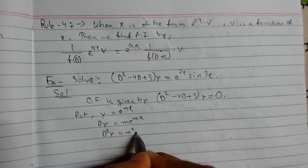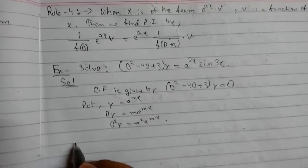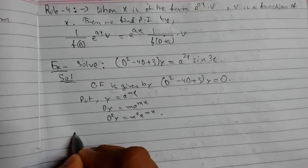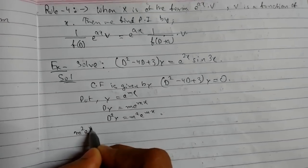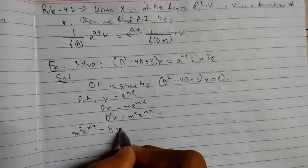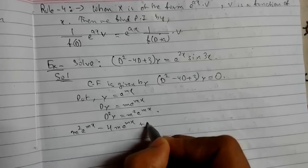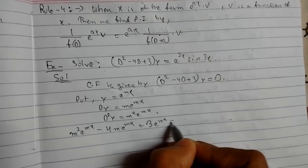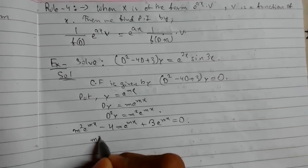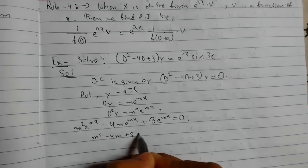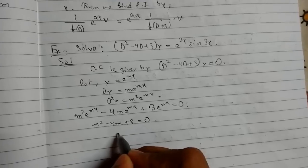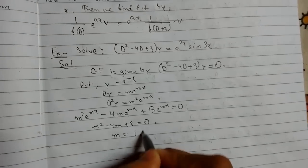D²y = m²e^(mx). Now putting these values back in the equation, we get m²e^(mx) - 4me^(mx) + 3e^(mx) = 0.